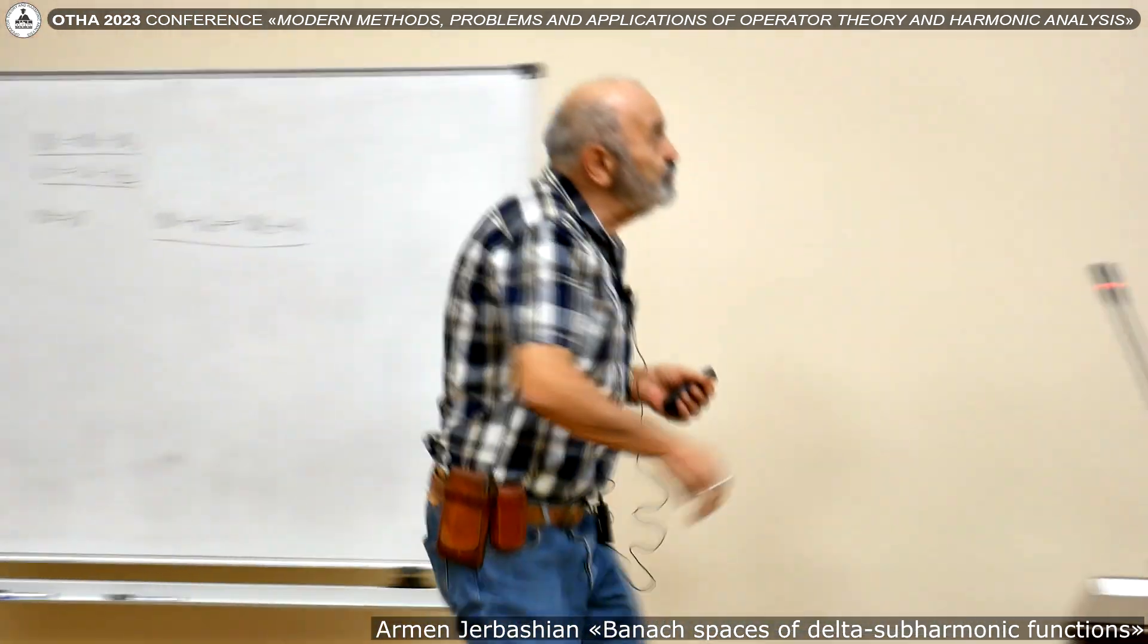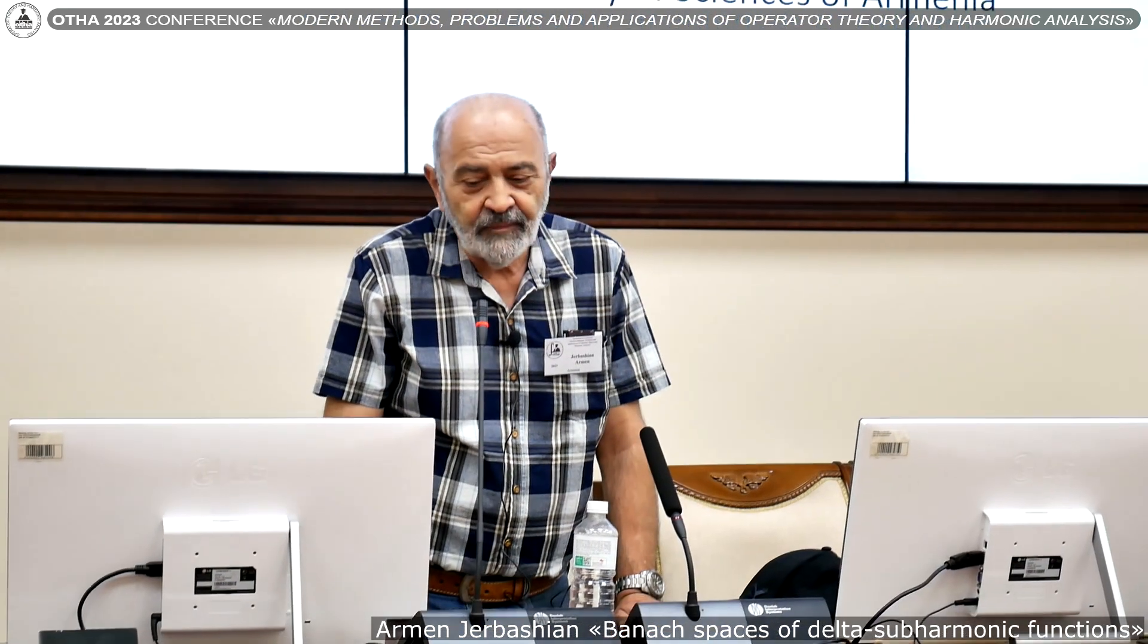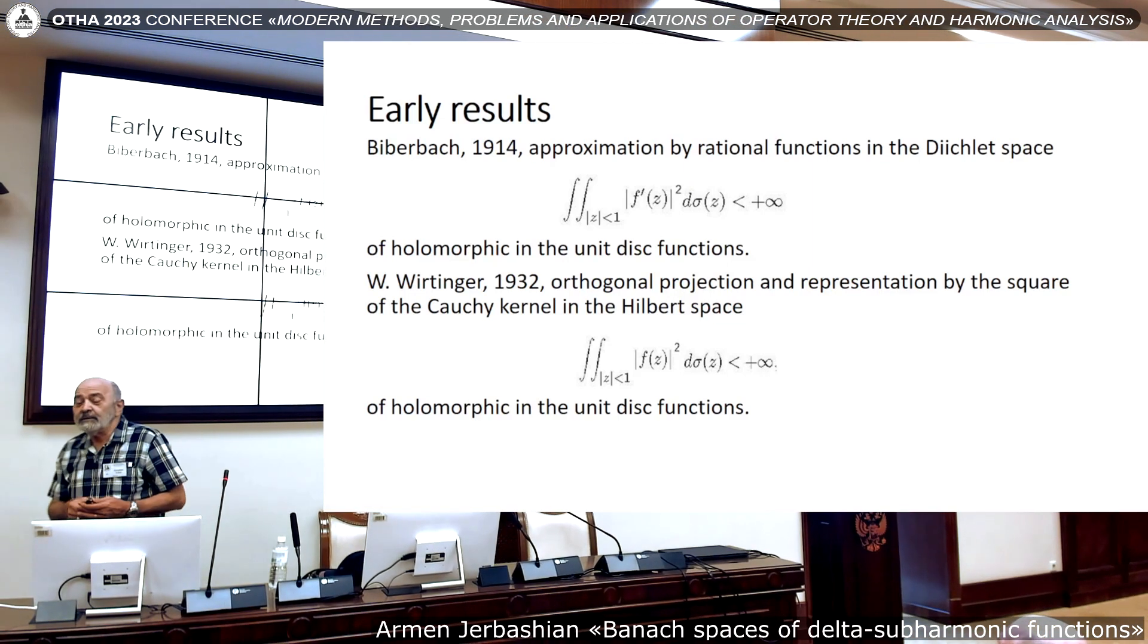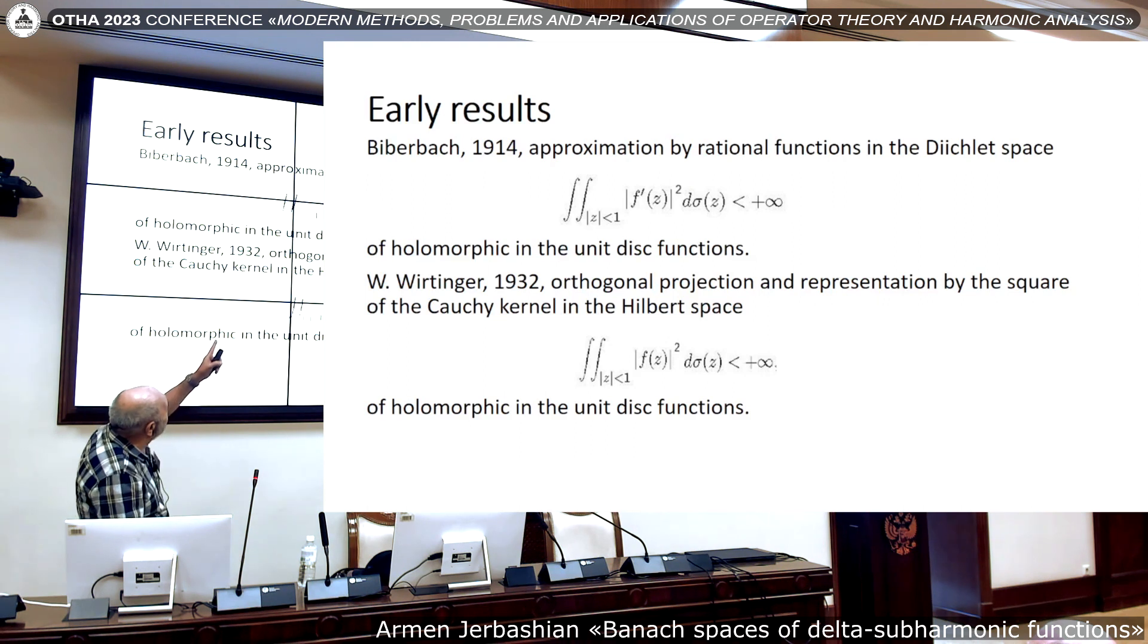So, going to Banach spaces. As I have to speak about weighted classes and spaces, I have to begin from history, some history, which were spread among the specialists via Rubin's book. About the weighted spaces, early results. One of the early results, maybe the earliest, is the result of Biberbach about approximation by rational functions in the Dirichlet spaces of this form. Functions holomorphic in the unit disk, the derivatives of which satisfy this condition. This is published in 1914 in Palermo Rendiconti, the Italian journal.